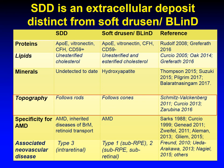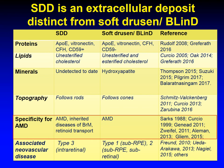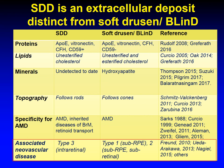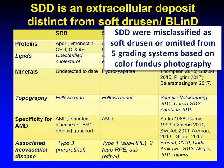In topography, SDD follows that of rods, including abundance in the perifovea and out around the optic nerve head, whereas soft drusen clinically and basal linear deposit histologically may follow the cones. Drusen are more specific for AMD, whereas SDD appears in several disorders, usually involving Bruch's membrane dysfunction or retinoid transport. SDD has a different clinical course for neovascularization. Importantly, SDD were misclassified as soft drusen or omitted altogether in five different grading systems based on color fundus photography, and these grading systems are the basis of population estimates and the genome-wide association studies.